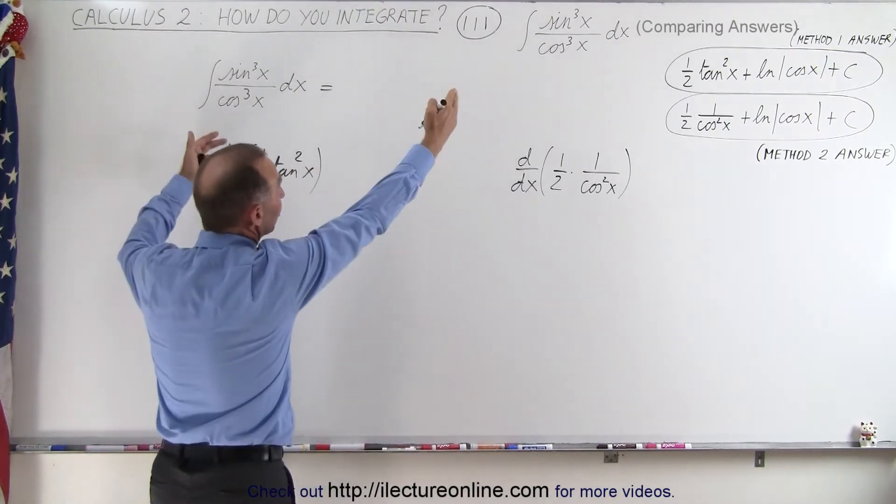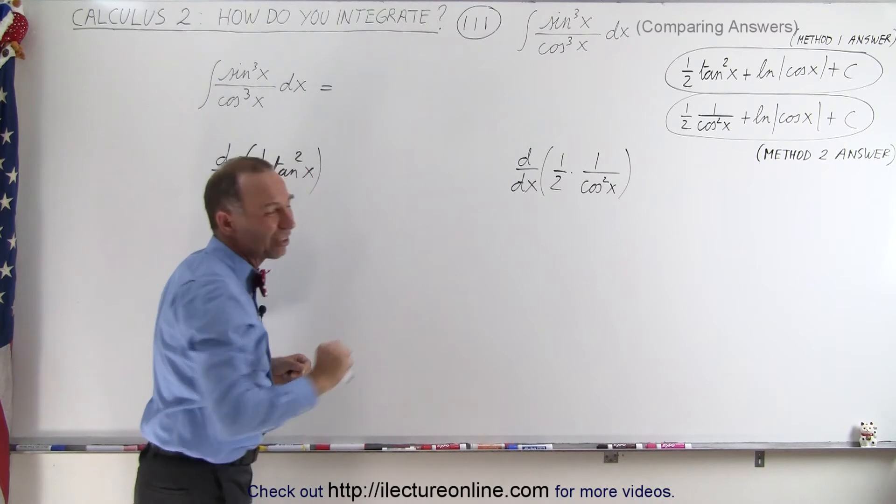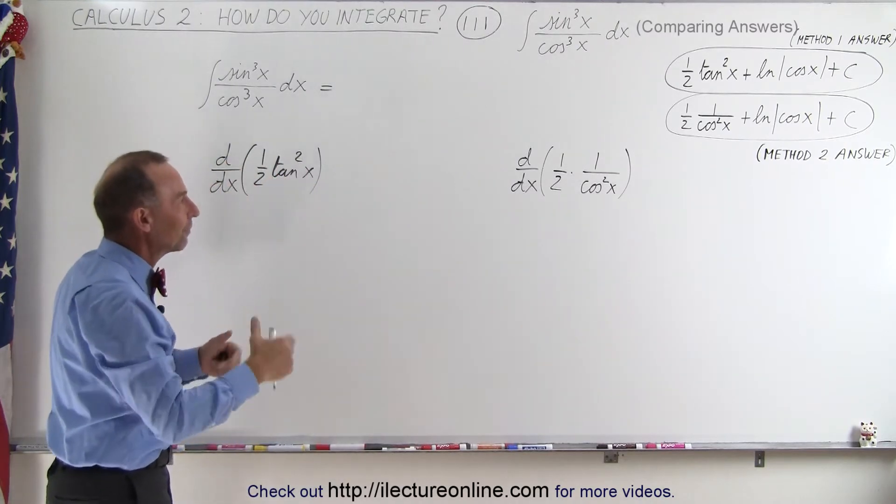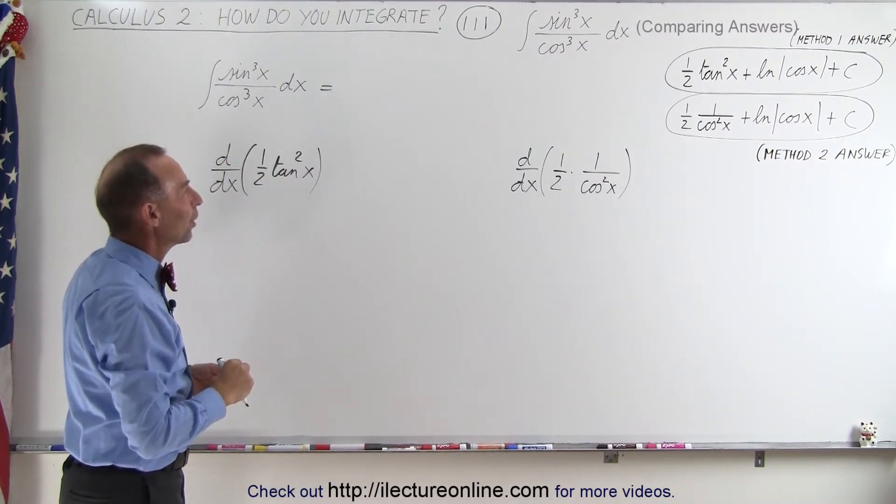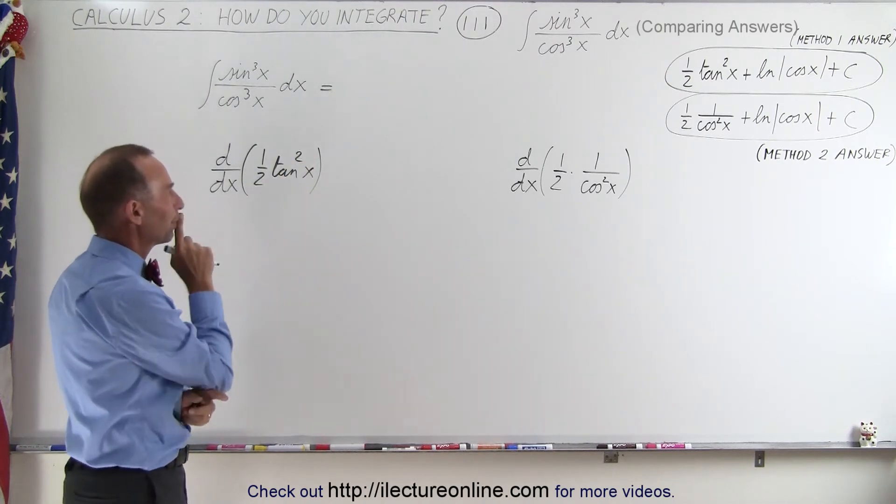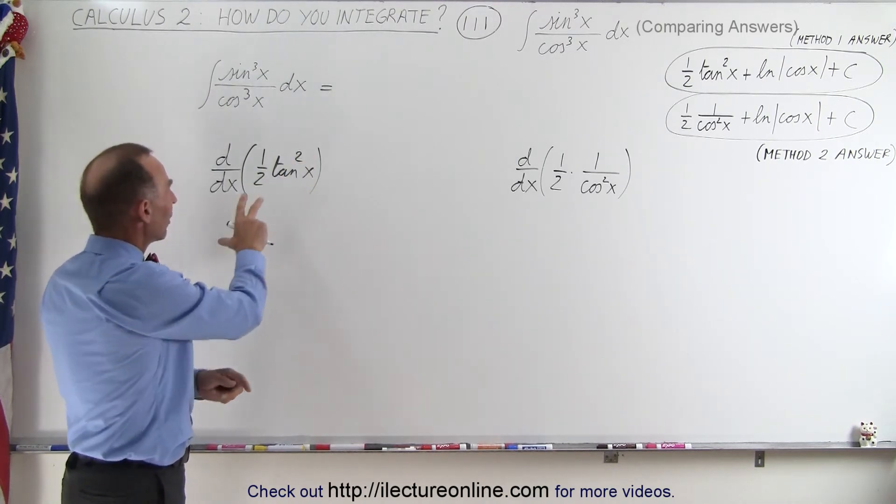In other words we should get something similar to what we started with. Of course we still need to add the natural log of cosine of x. We need to add the derivative of that as well to get back to what we started with. All right so let's go ahead and do that.